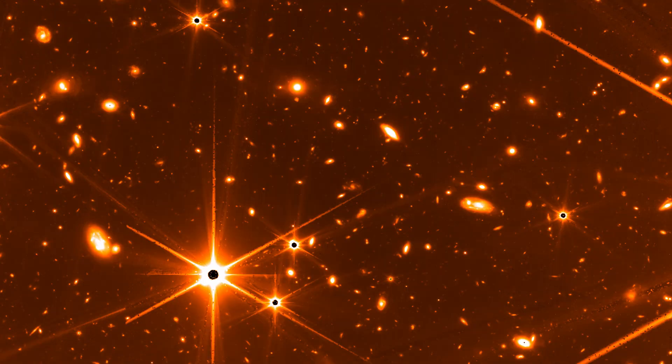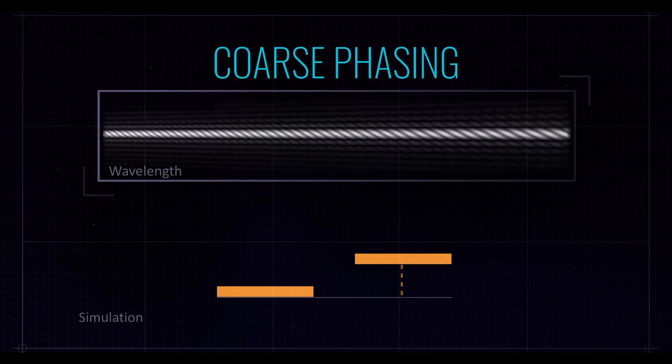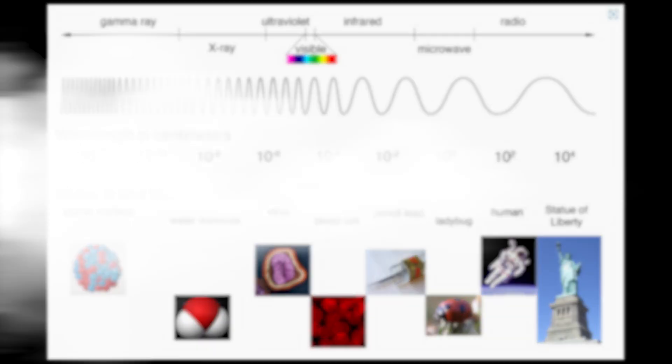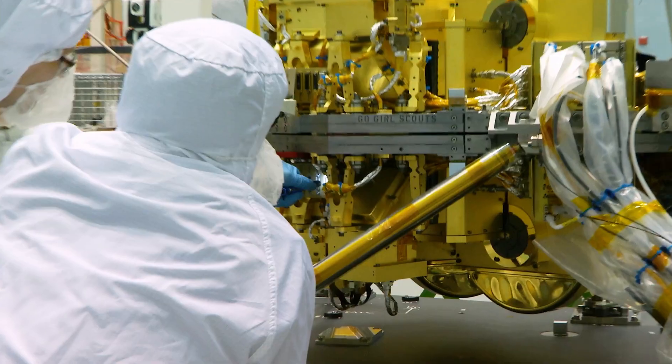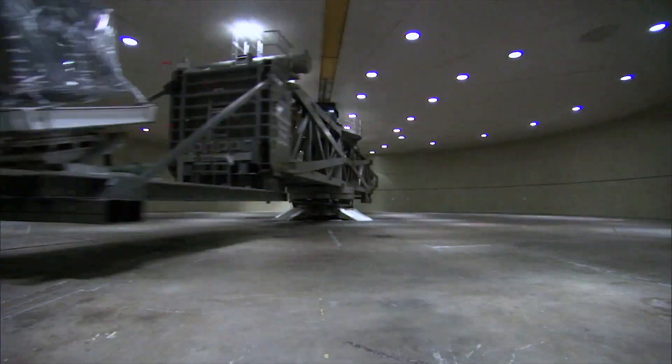One thing to note is that this teaser image cannot be studied to determine the age of these space structures as color filters weren't used in the imaging process. Color details are necessary to provide information about space. But even without it, it still provides a remarkably stunning view into the cosmos. NASA did not think that the telescope would be able to pull it off.